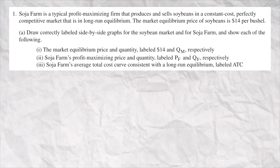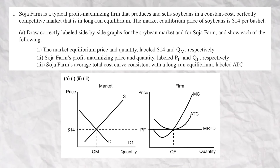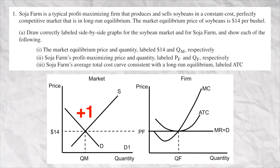Okay, here we go with free response number one. They tell you it's a perfectly competitive constant cost market, and they started off with graphs. You drew a market and a firm with the firm making no economic profit. I graded a free response just like this at the AP exam reading, and you got four points for drawing that graph: one point for correctly drawing and labeling the market, one point for having the price taken by the firm with a horizontal demand curve, one point for the quantity, and one point for the ATC at its minimum point showing no economic profit.